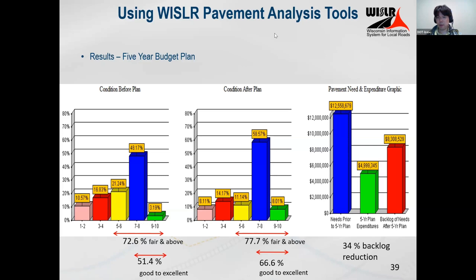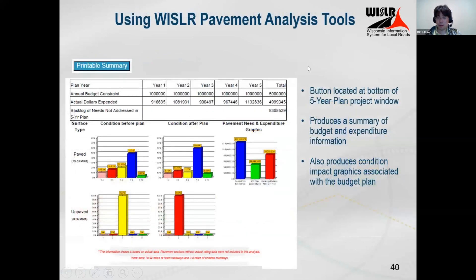A question came in: if seal coats are such a good maintenance activity, why doesn't DOT do them on their system? We're not quite the group to ask that question to. There is a printable summary version that gives all this information — graphs and budget — in one printable sheet of paper, organized with budget and expenditures first and then the condition graphs.